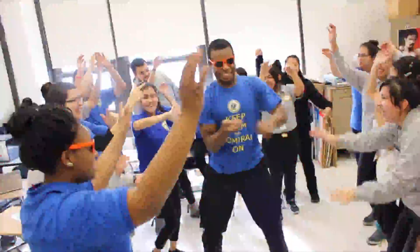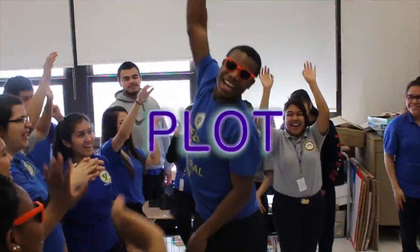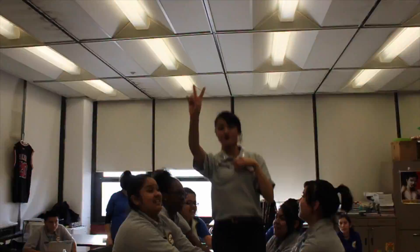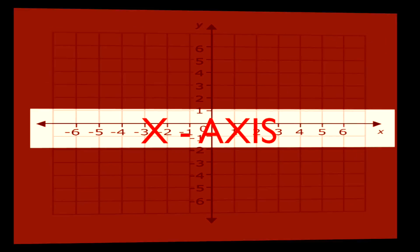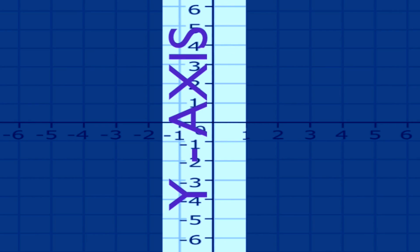Plot, plot, plot... The coordinate plane has two axes: the horizontal X and the vertical Y.